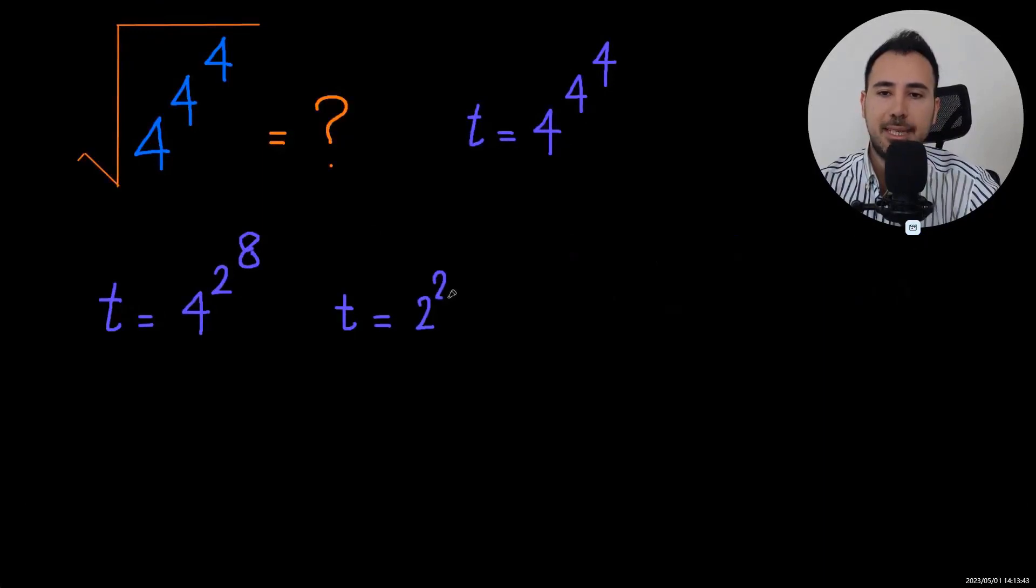Now, four is the same as two squared. And by the power rule, we're supposed to multiply the exponents. Two to the ninth power is 512.